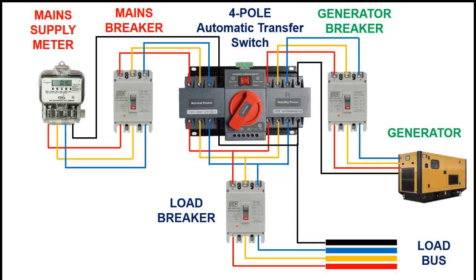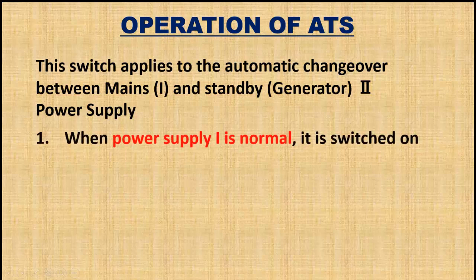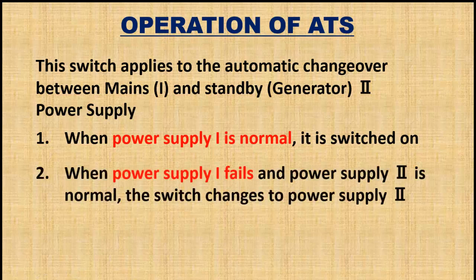Now we will see how the automatic transfer or change over switch works. This switch applies to the automatic change over between mains power supply and generator power supply. When power supply 1 is normal, it is switched on and connects with load. When power supply 1 fails and power supply 2 or generator supply is normal, the switch changes to power supply 2.